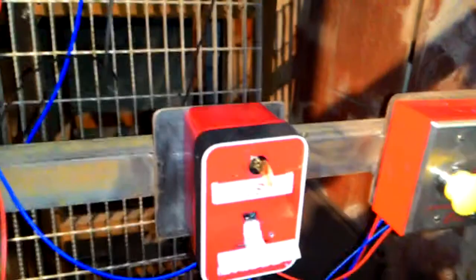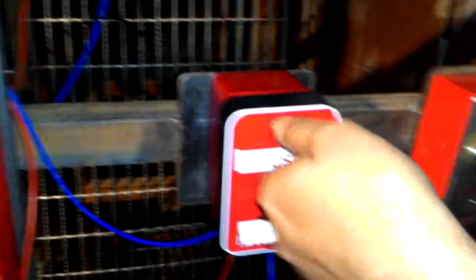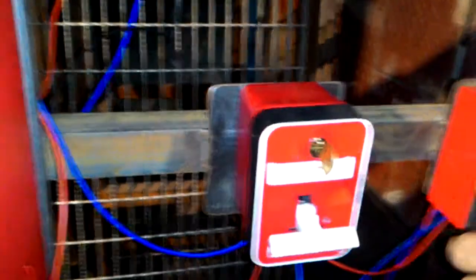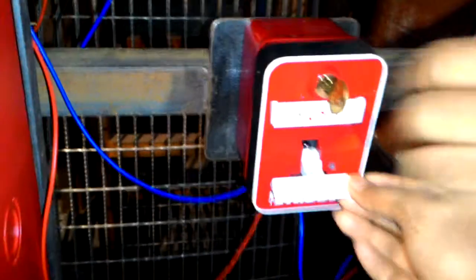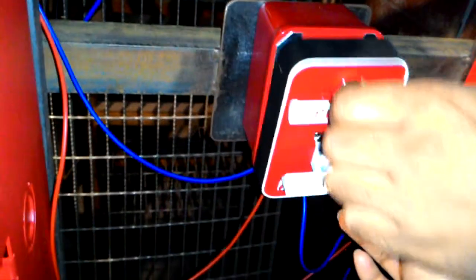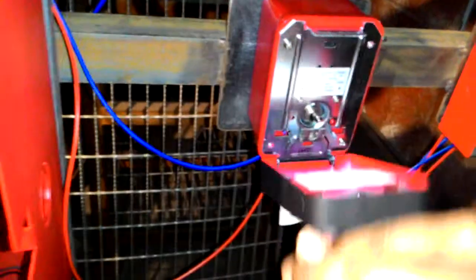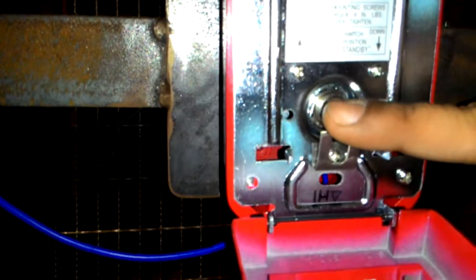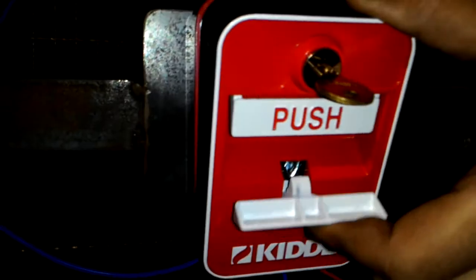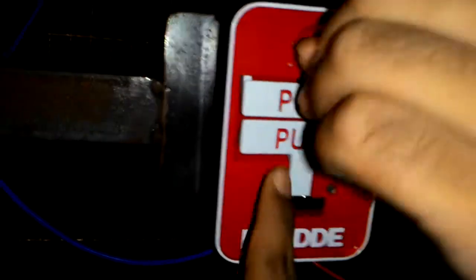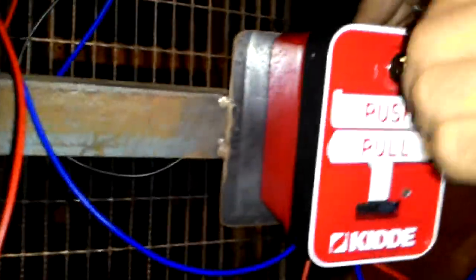But in case of manual call point, what you are supposed to do is you will have to get the manual call point's pull button back to the normal position. That will be done using the key. You will open it. You can see there is a toggle switch. You will toggle it downwards, push the frame back on, push back the pull and lock it.